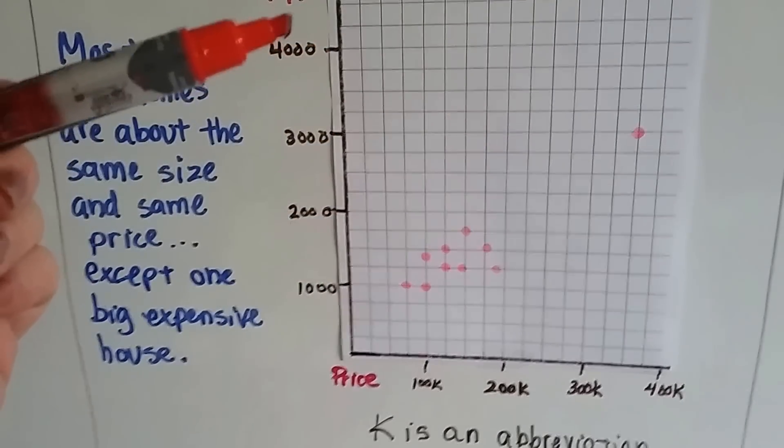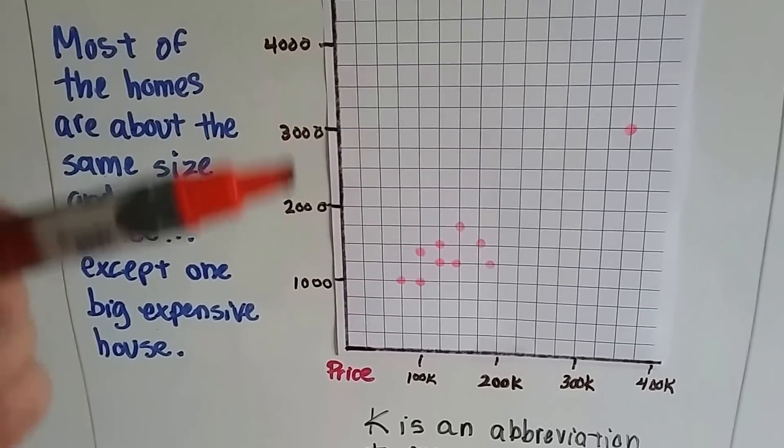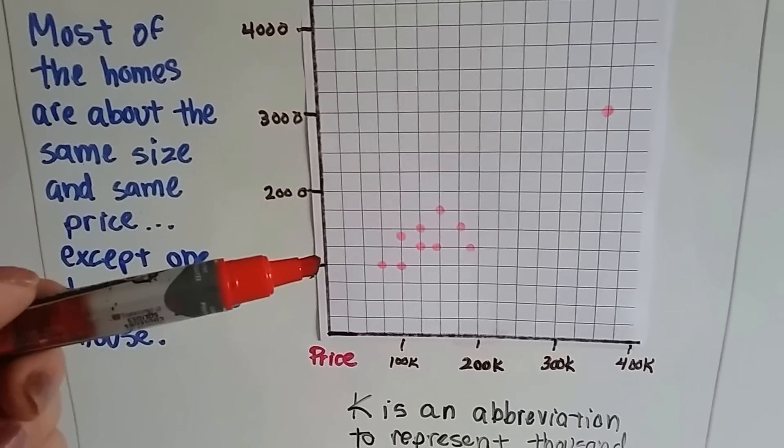So that would be a very big house, wouldn't it? 4,000 square feet. Most houses are between 1,000 and 2,000 square feet.